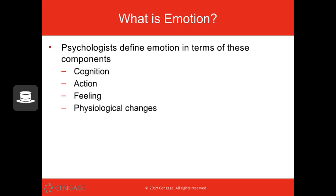Cognition — the thoughts involved with the emotion. So, 'oh, I hate this person, they're so dumb, why do they disagree with me.' Actions — the very rapid typing that you're doing as you're trying to get this person to agree with you. The feeling — not just the thoughts, but the actual emotion that you feel. And then the physiological changes: what is happening in your body that allows you to experience anger?